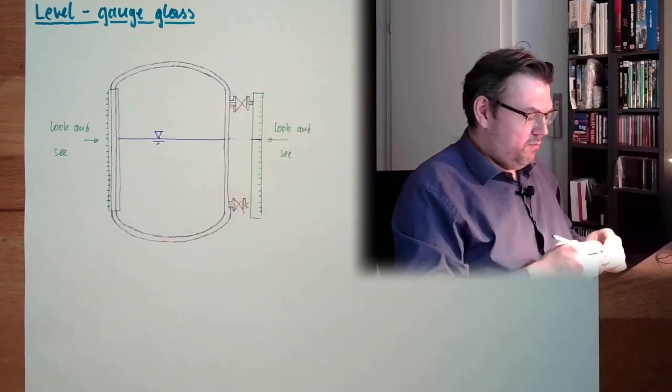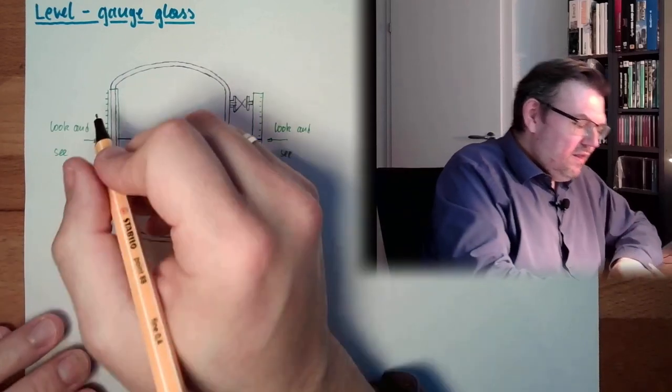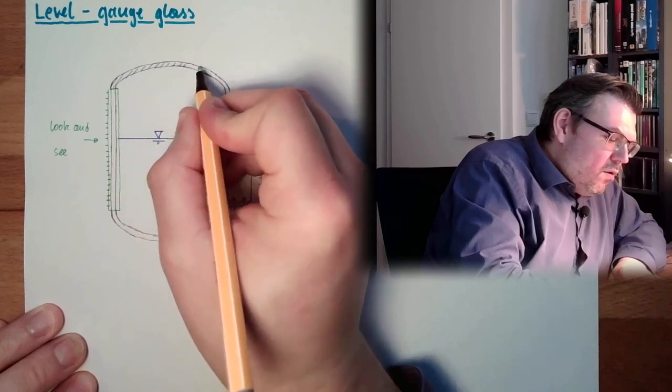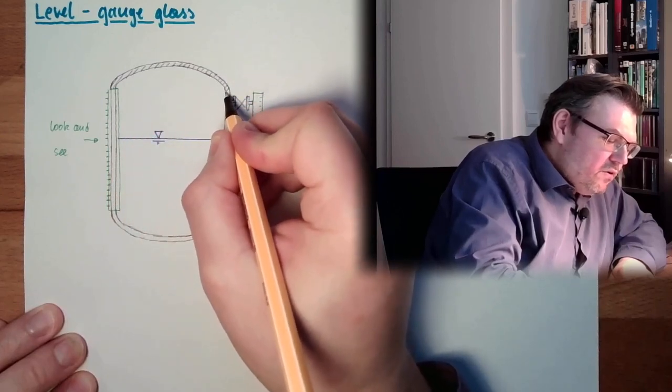So these are the two possibilities. Either build it in directly into the tank, or make two flanges and build it externally.